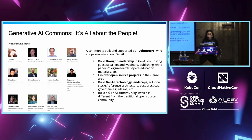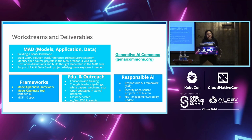I highly recommend you join the meeting — it's a Zoom call. All of our track leaders are volunteer-based, and we build thought leadership and work on open source projects in the Gen AI space. Currently, we have four work stream groups. The first is called MAD, which stands for Model Application Data. We work on projects in that space and are currently building a landscape, then a reference architecture, best practices, and ecosystem. We also have a Responsible AI work stream.